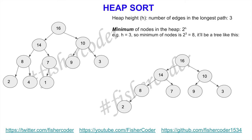Now let's think about the minimum and maximum number of nodes in the heap. The minimum number of nodes for height h is 2 to the power of h. With h equal to 3, that's 2³ = 8 nodes. That's the minimum valid heap. The maximum is a completely full binary tree, which gives 2^(h+1) − 1 nodes. For h = 3: 2^4 = 16, minus 1 = 15 nodes. So n ranges from 2^h to 2^(h+1) − 1.